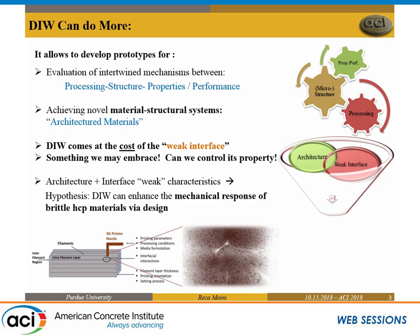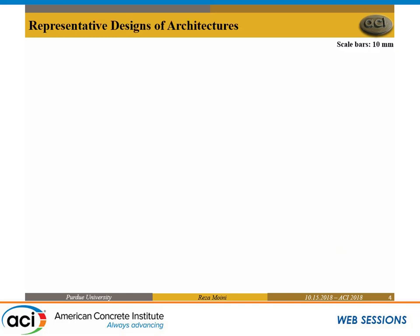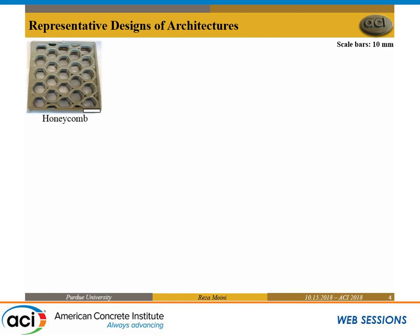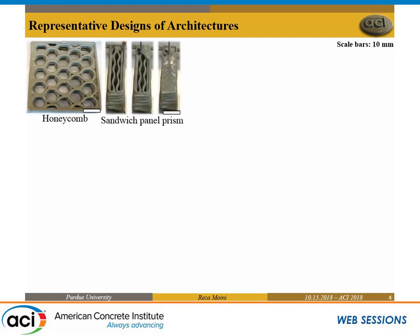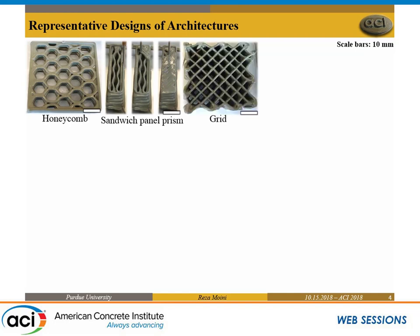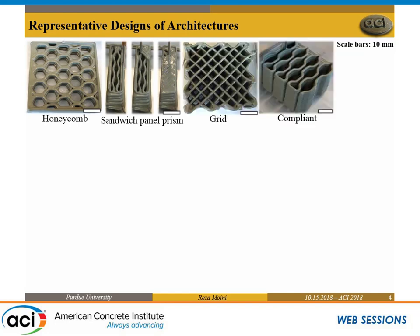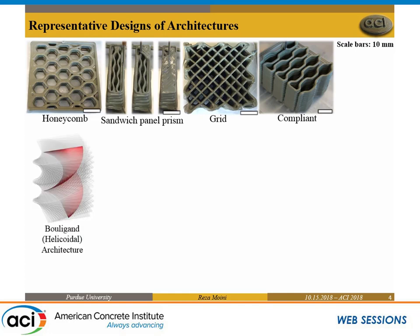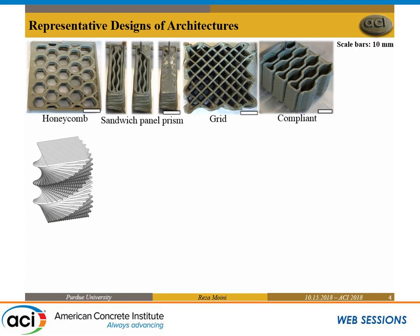Our hypothesis is that we could have enhanced mechanical response. You could potentially control the mechanical response of the structure. If you could do 3D printing and control the geometry, what kinds of architectures can you achieve? You can achieve honeycomb architectures, a prism with solid bottom and top layers, a grid architecture, a compliant architecture. You can also have what we call Bouligand architectures — essentially a helicoidal pattern in which at each layer you rotate the direction of the filaments and keep building up.